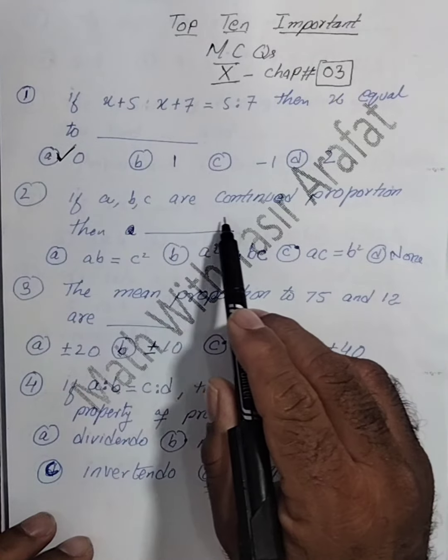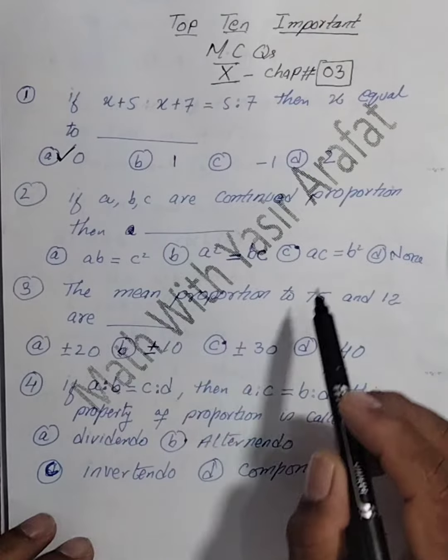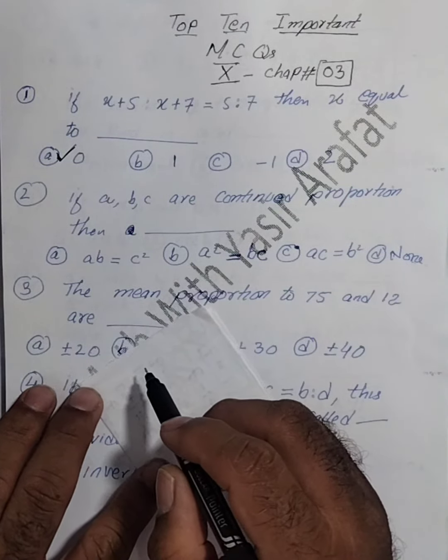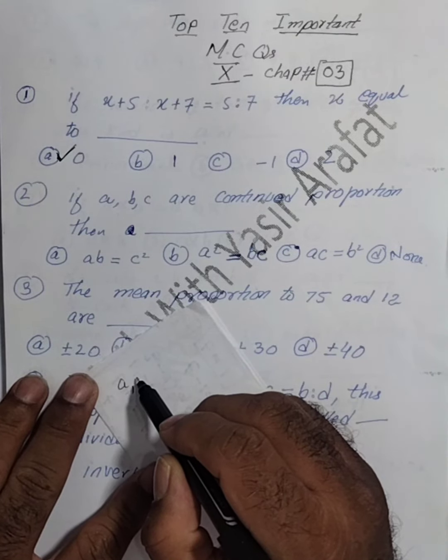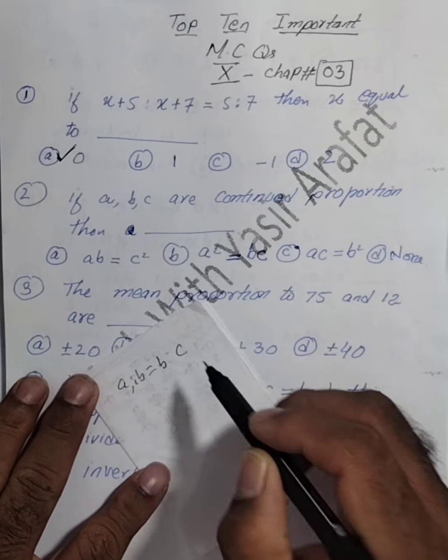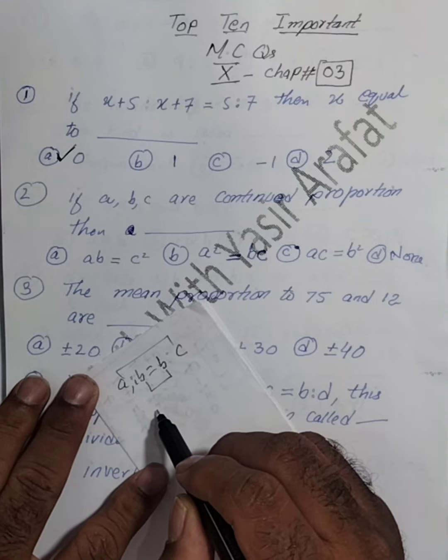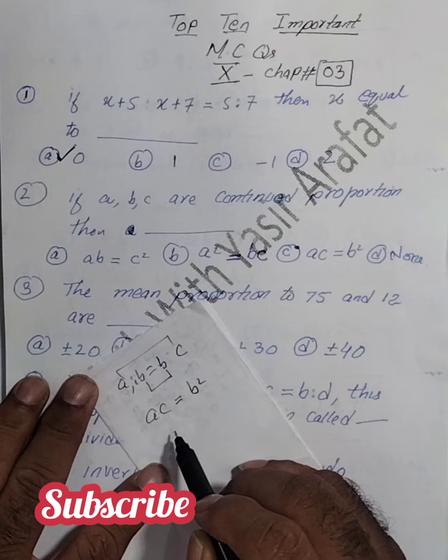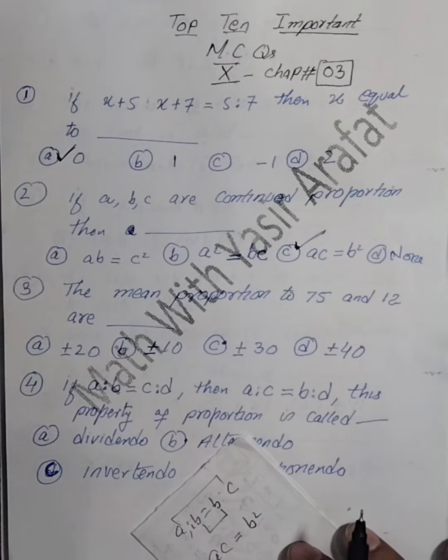a, b, c are continued proportion, then which option is correct here? So here a, b, c is continuous, that means a ratio b equals b ratio c. So the product of extremes will be equal to the product of means. So this is ac equals b squared. So the c option is correct here.